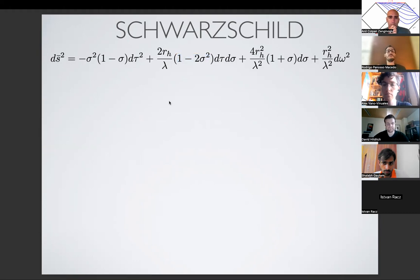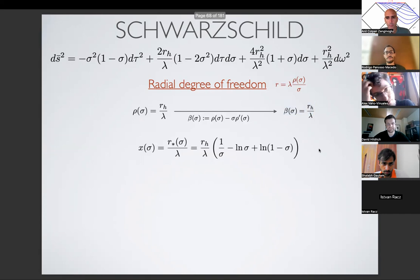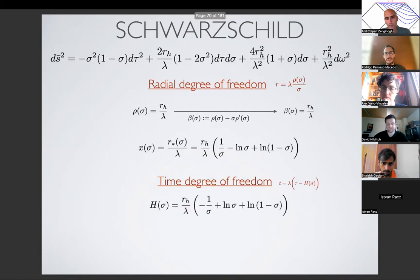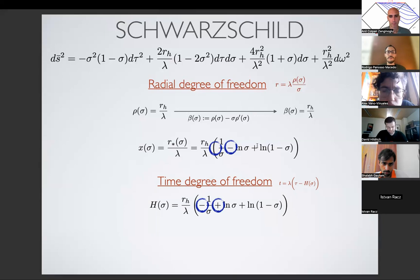If you think that this was a generic transformation, this function here is just a constant, and beta is also a constant with this construction. The tortoise coordinate that comes out is dimensionless but still the tortoise coordinate from textbooks, rewritten with sigma. For the time degree of freedom, the height function has a structure which I realized a few months ago: it's just changing the sign in the tortoise coordinate. So the height function is not that different from the tortoise coordinate in this setup — it's just a sign change, nothing fancy.